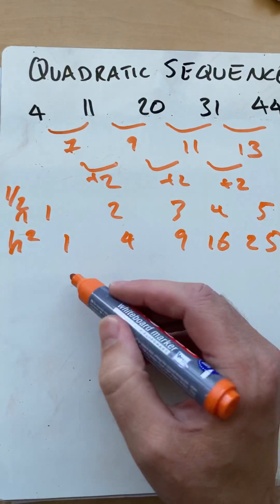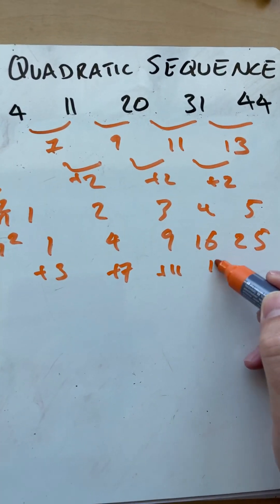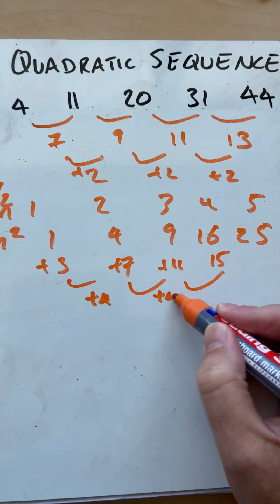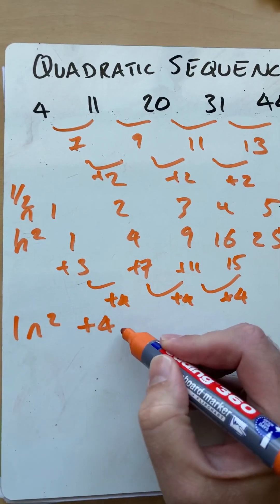But what do I need to add to that? I need to add 3, then I add 7, then I'm adding 11, and then I'm adding 15. So each of these, for the linear part, is I'm adding 4. So I know that I've got 1n squared plus 4n.